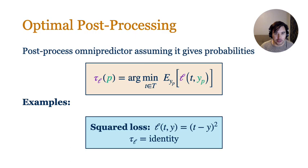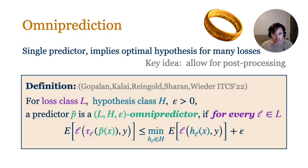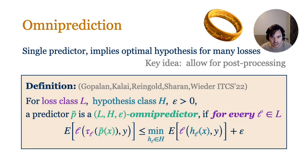Returning to earlier examples, for the squared loss — or really any so-called proper loss — the optimal post-processing is simply the identity function, whereas for L1 the post-processing rounds to the closest binary value. With this post-processing in place, we can understand the definition of omnipredictors. For a loss class L, a hypothesis class H, and error parameter epsilon, an L-H-epsilon omnipredictor gives an efficient way to make epsilon-optimal predictions compared with hypotheses in H under any loss in the class L.